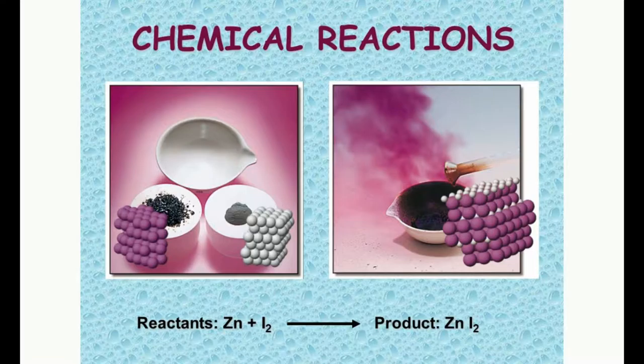You will have to end up predicting products, and that is the hardest part of this unit. I'm going to give you the reactant side of the equation, and you're going to have to predict what it's going to turn into. Everything from the previous unit tells you how to do that. If you didn't master the last unit, you're going to have a little trouble.